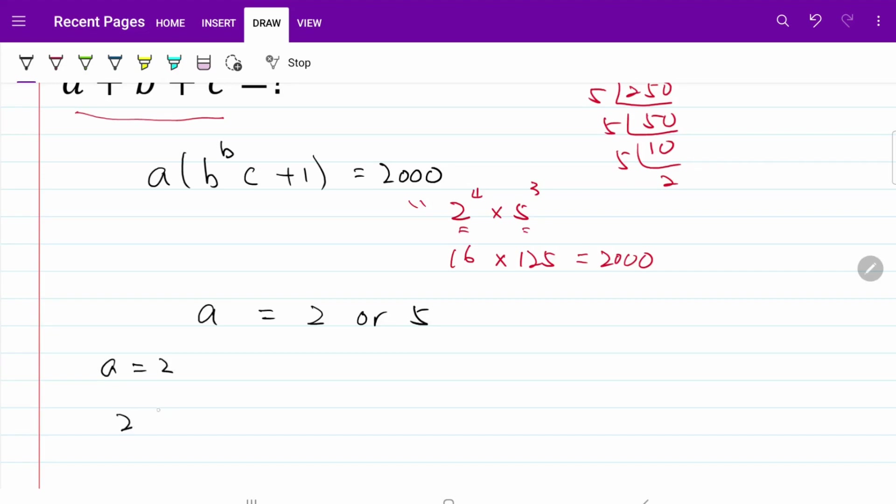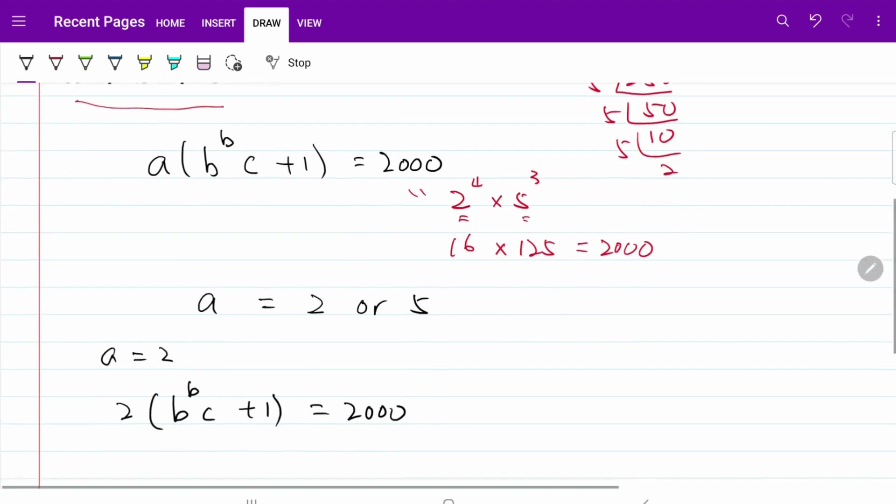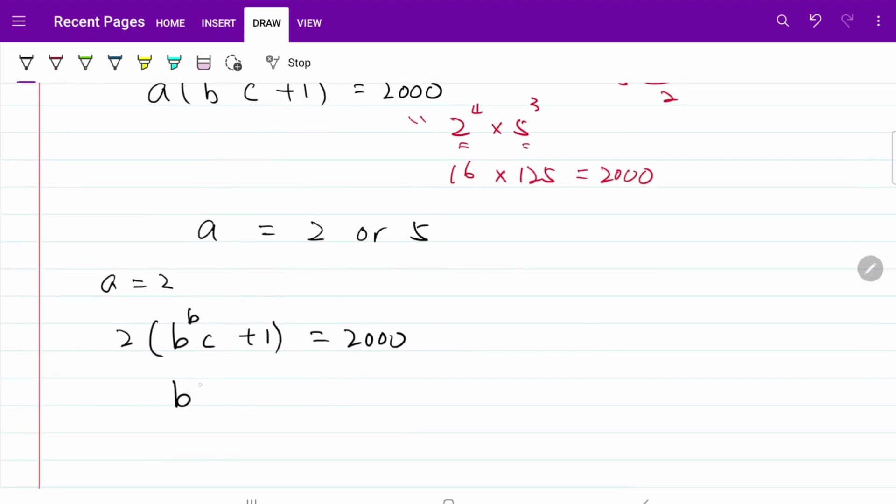So what I have is 2 multiplied by b to the power of b multiplied by c plus 1 is equal to 1,000. In other words, b to the power of b multiplied by c is equal to 999. So our next step is going to be taking a look at this number and try to break it down into prime numbers in such a way that it would fit into this equation, or rather this expression format.